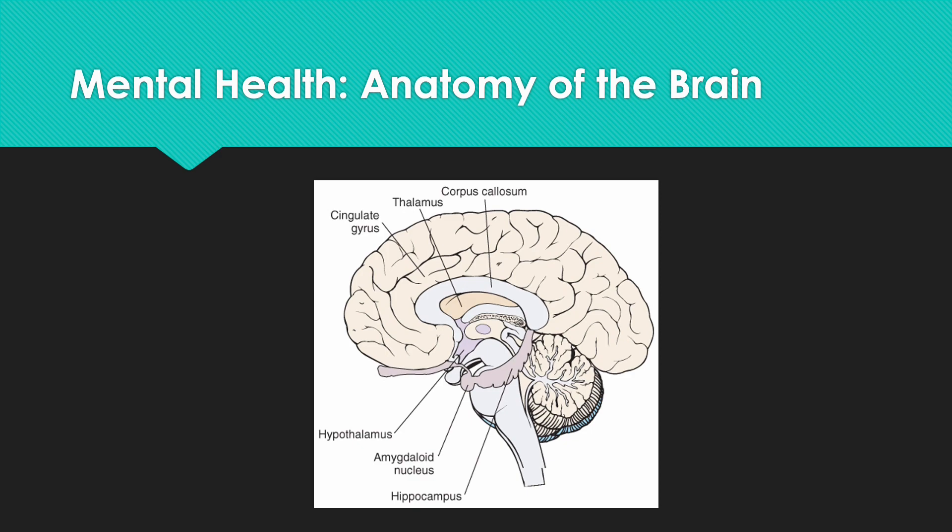Here's a basic diagram. The corpus callosum separates the left and right hemisphere. We have the thalamus, which is a little deeper; the hypothalamus is below that; and the hippocampus is super important for memory and recall. Now let's talk about neurotransmitters.